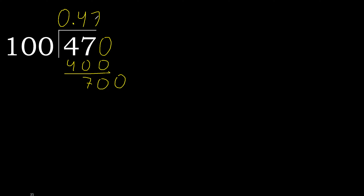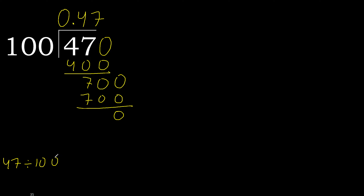100 multiplied by 7 is 700. Subtract: 0. 0 therefore finished. 47 divided by 100 equals 0.47.